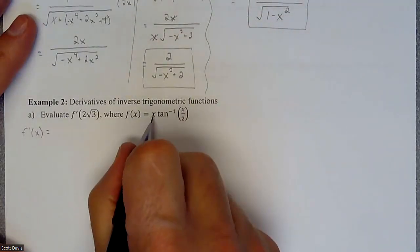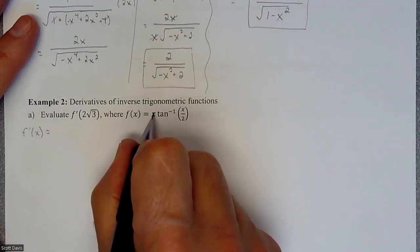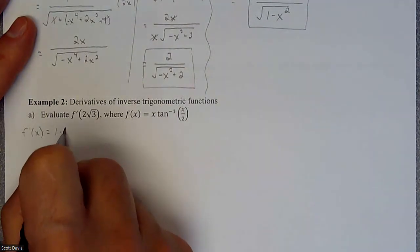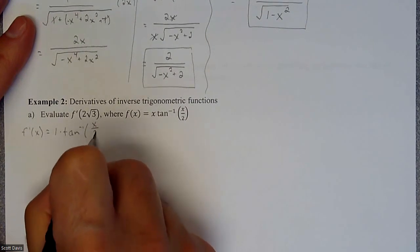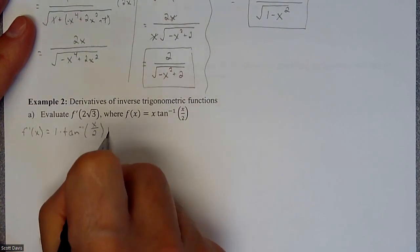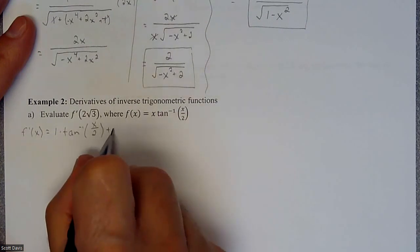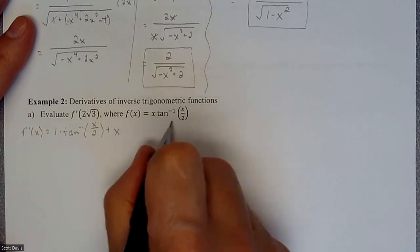So the derivative, if we're doing a product rule, derivative of the first is 1 times the second, which is the inverse tangent of x over 2. And then plus the first times the derivative of the second.